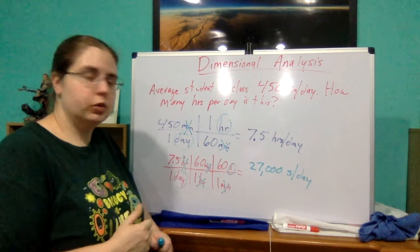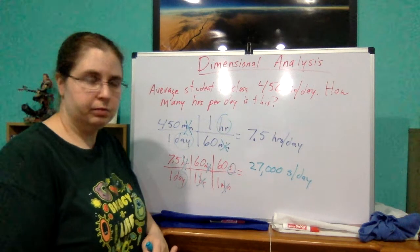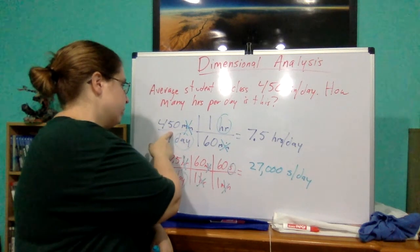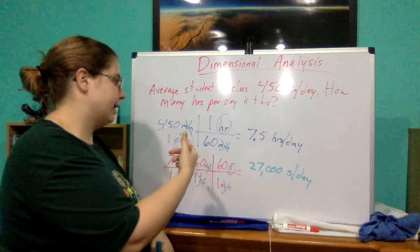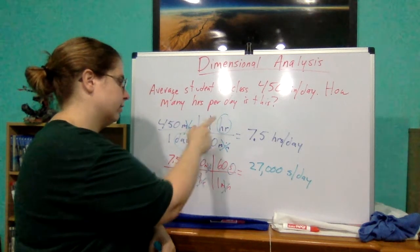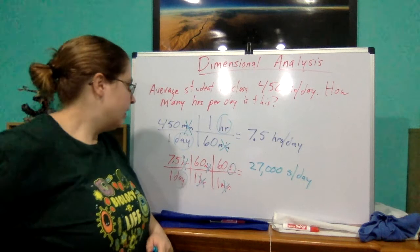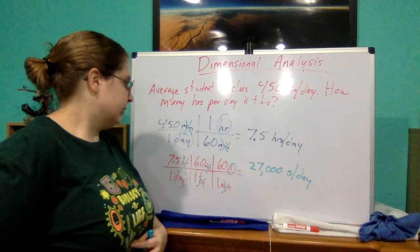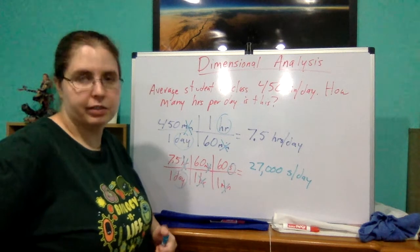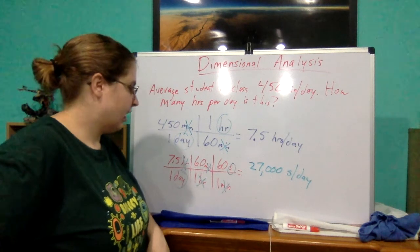Now, actually, what I also could have done, if I wanted to, is I could have gone back to minutes. We already knew the minutes. So I could have just taken the minutes, multiplied that by 1 minute, 60 seconds, multiply that across. But 450 times 60 should be 27,000 seconds per day.